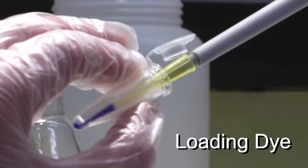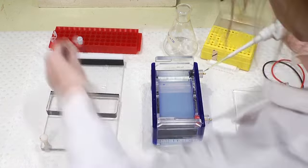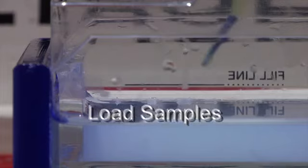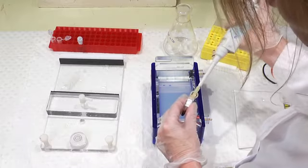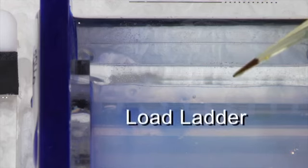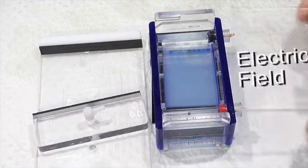After we take out the well combs, each sample is mixed with a loading dye. We then load our plasmid sample and insert sample into two different wells of the gel. We also load a standard ladder containing DNA fragments of known sizes, and then finally apply the electric field.